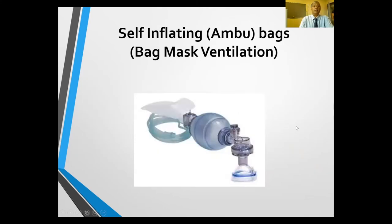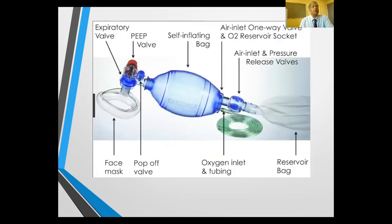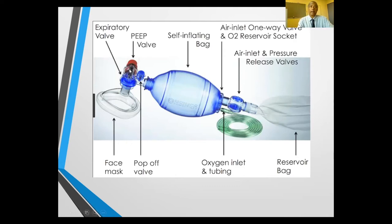The self-inflating bag, or Ambu bag, is a bag-mask ventilation device used primarily for resuscitation in cardiac arrest situations. It has a mask similar to a BiPAP or CPAP mask that fits safely onto the face. There is an expiratory valve where exhalation air exits the system, and a PEEP valve that can be dialed up to 20 centimeters of water pressure, which is extremely helpful in resuscitation. There is also a pop-up valve that releases pressure if it goes too high in the system.